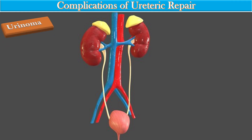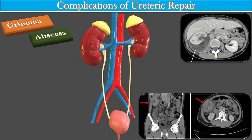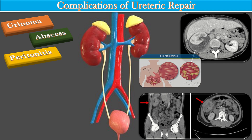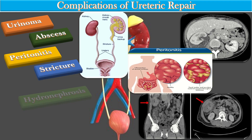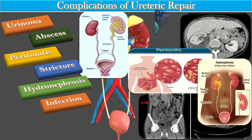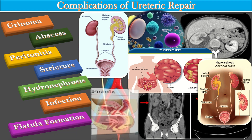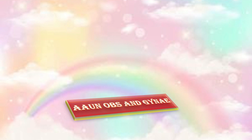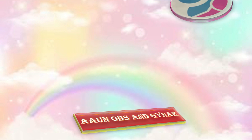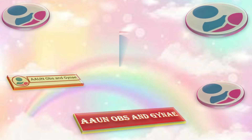The complications of ureteric repair include urinoma, abscess, peritonitis, stricture, hydronephrosis, infarction, and fistula formation. Thank you very much — that was an overview of ureteric repair.